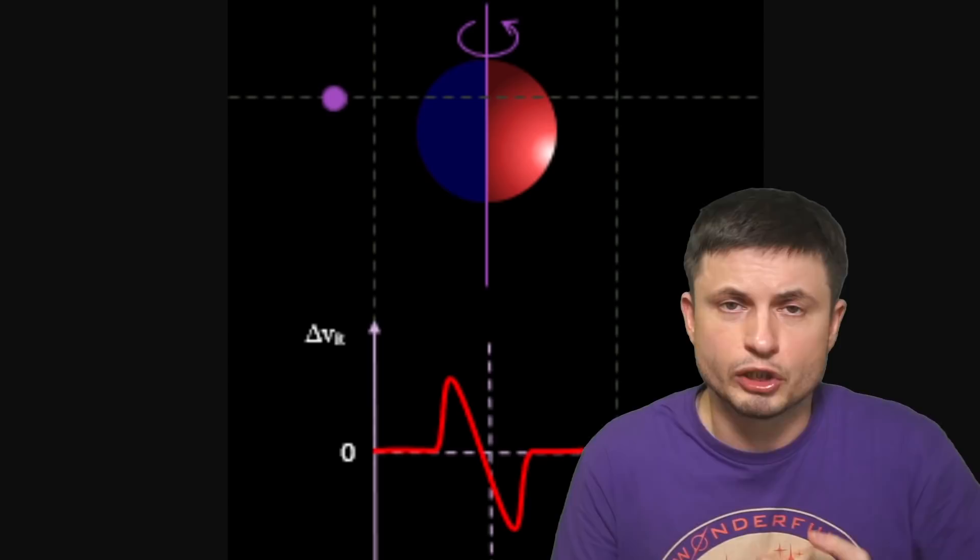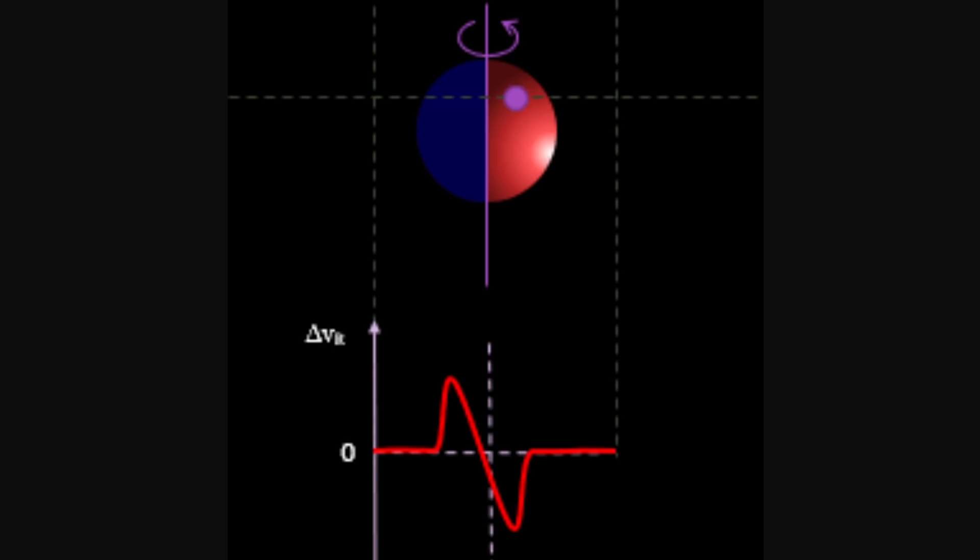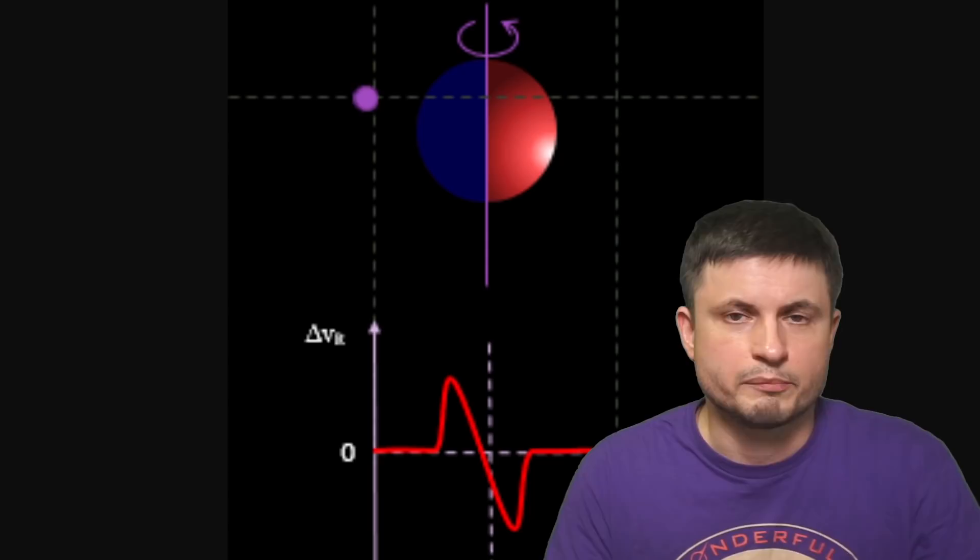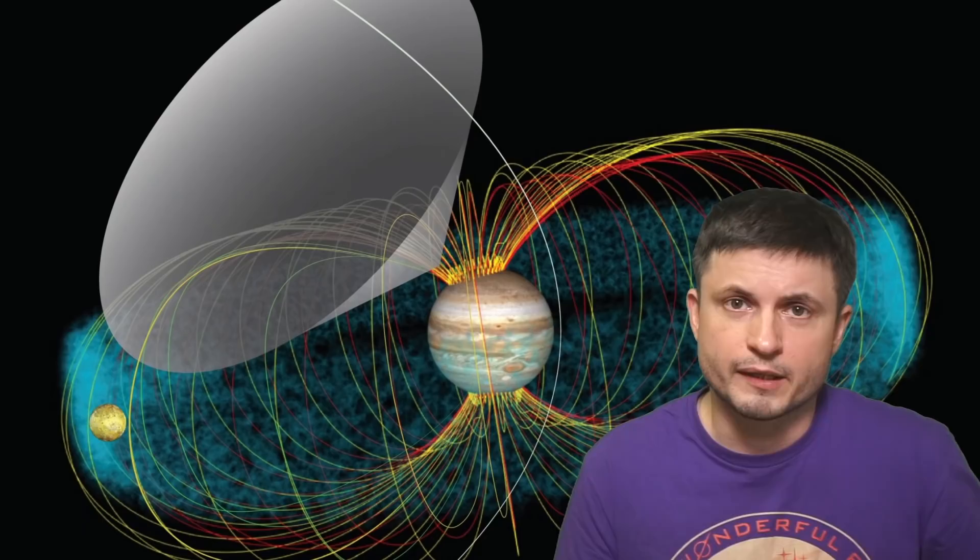It's also possible to use what's known as the Doppler spectroscopy by looking at the changes in the red shift and the blue shift, to try to discover these slight variations in the velocity, and thus discover a moon potentially orbiting around the planet. But this method is also extremely difficult and requires a lot of precision, so nothing has been found this way either.